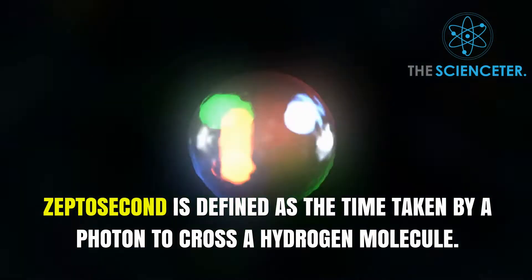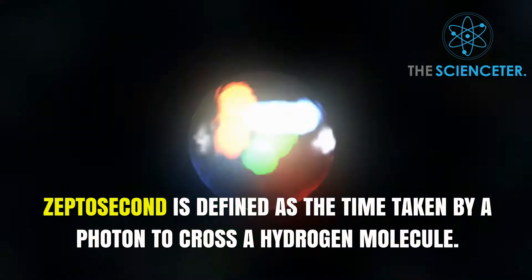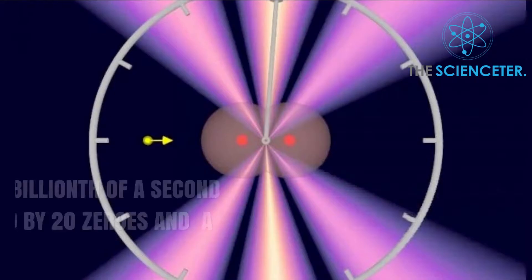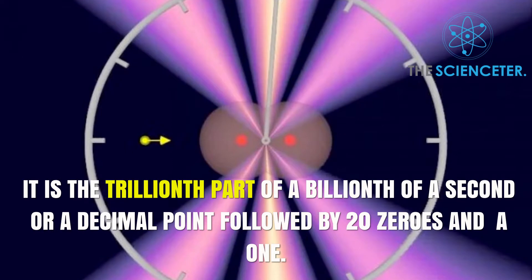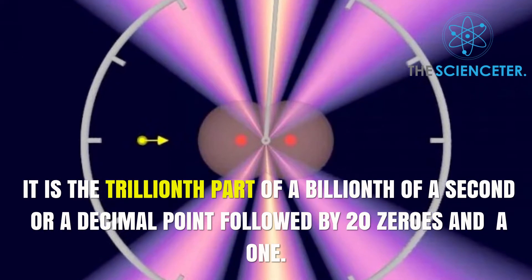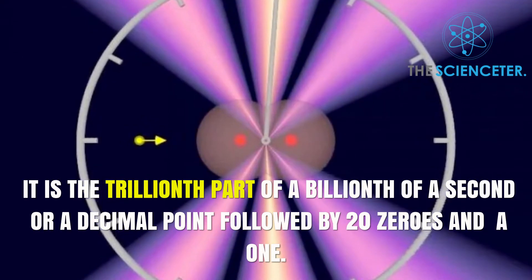Zeptosecond is defined as the time taken by a photon to cross a hydrogen molecule. It is the trillionth part of a billionth of a second, or a decimal point followed by 20 zeros and a one.